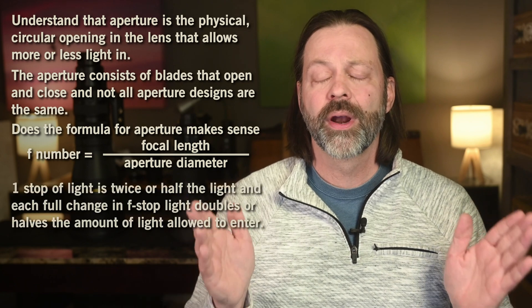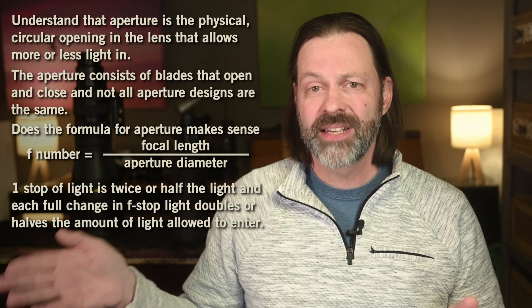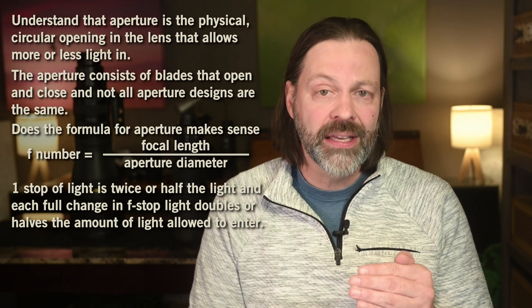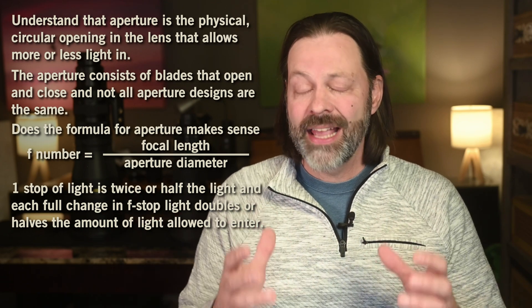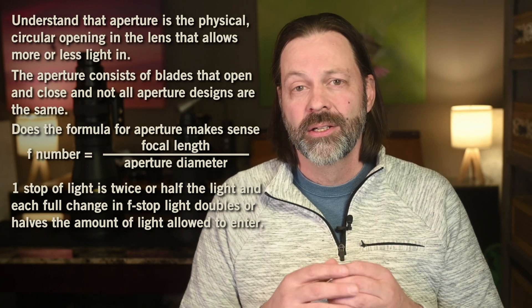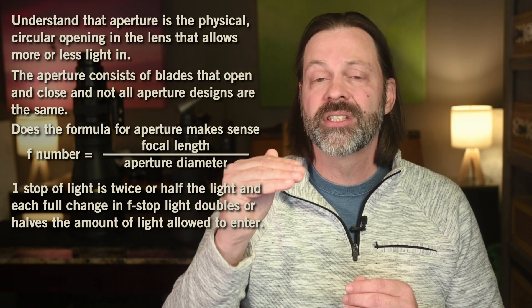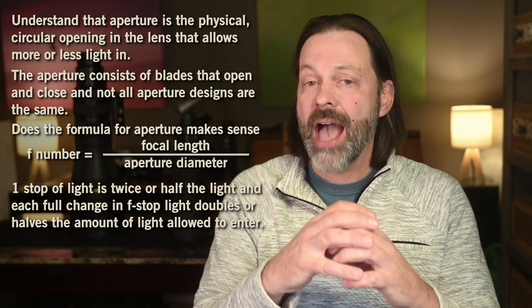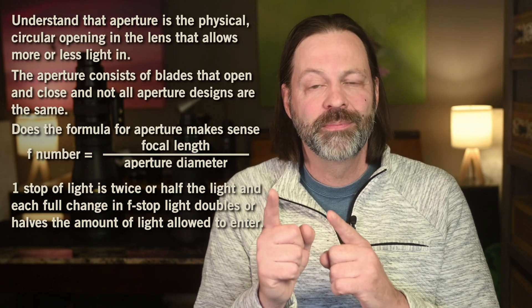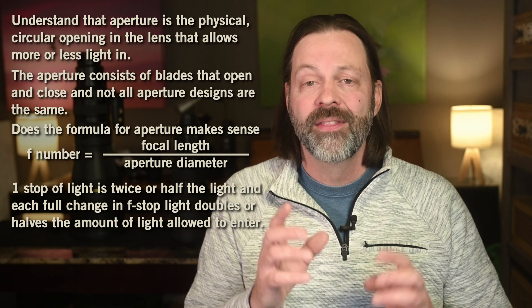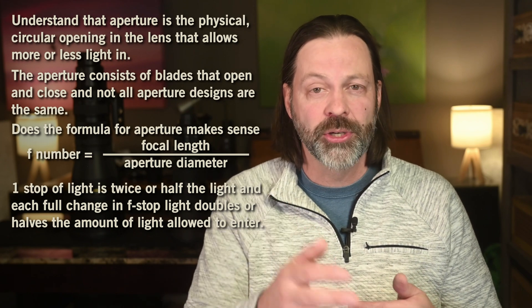It's critical to understand what a stop of light really is and how it relates to aperture. A stop of light is a doubling or halving of the light that enters the camera. In the case of aperture, that doubling or halving is the area of the light coming in. So as we move our f-stops one full stop up or one full stop down, we are doubling or halving the area — the actual opening — not the diameter. That's what doubles or halves the light coming in.